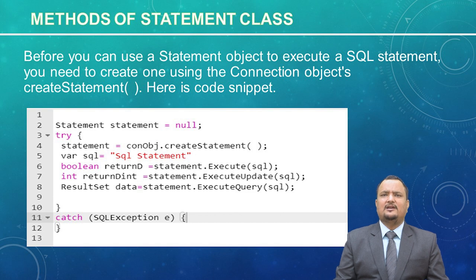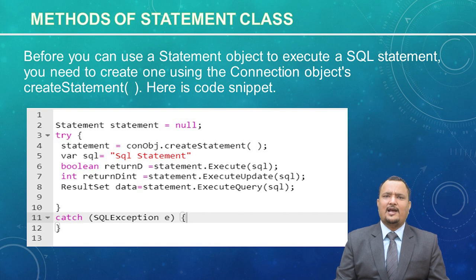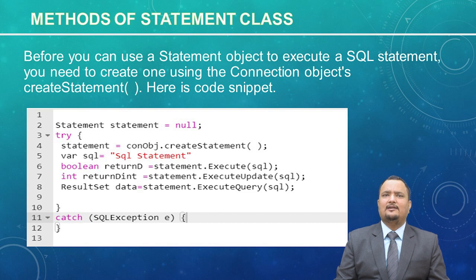Now in this slide, you will learn how to create objects of Statement, Prepared Statement, and Callable Statement, and the methods of these classes. First, you will learn about creating the Statement class. Before you can use a statement object to execute SQL statements, you need to create one using the connection object's create statement method. Here is a code snippet: Statement statement = null; declares the object, and statement = connectionObject.createStatement(); creates the object of statement. A catch block handles any exception from the database side.